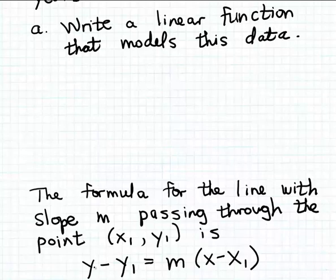In this formula, you take the variable y and subtract off the y-coordinate of the point you're given — y₁ is a constant. That equals the slope times the quantity x minus x₁, where x₁ is the x-coordinate of the given point. To apply this formula, we need to know the slope.